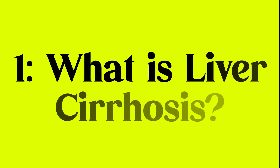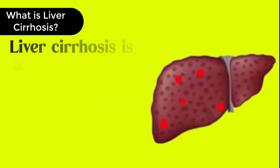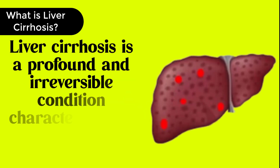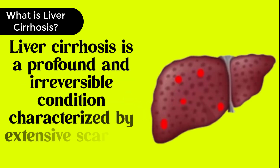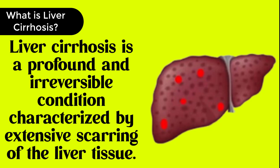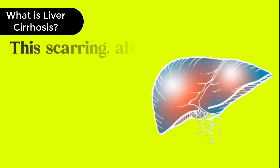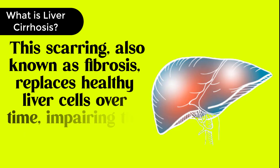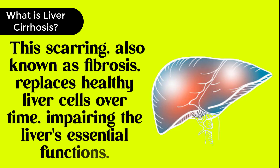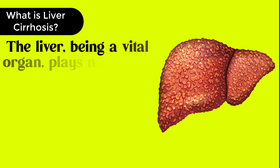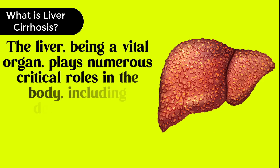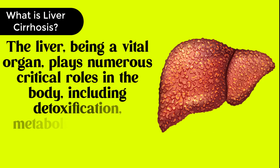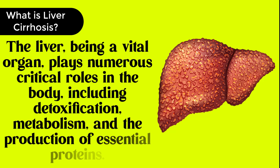What is liver cirrhosis? Liver cirrhosis is a profound and irreversible condition characterized by extensive scarring of the liver tissue. This scarring, also known as fibrosis, replaces healthy liver cells over time, impairing the liver's essential functions. The liver, being a vital organ, plays numerous critical roles in the body, including detoxification, metabolism, and the production of essential proteins.